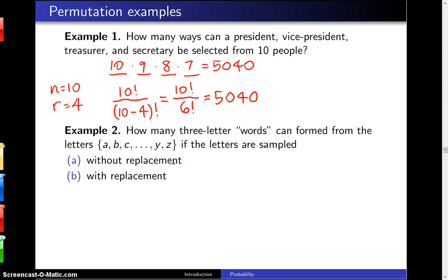The question is: how many three-letter words can be formed from the letters A, B, C all the way down to X, Y, Z if the letters are sampled first without replacement and then with replacement?